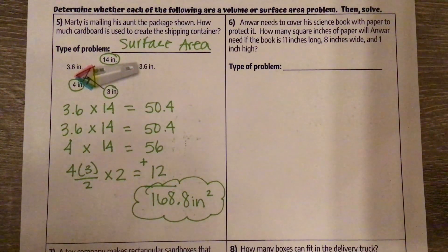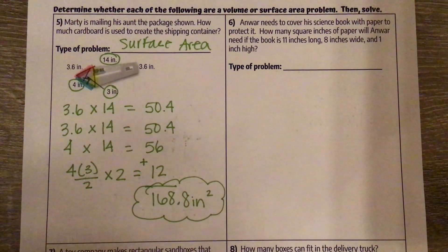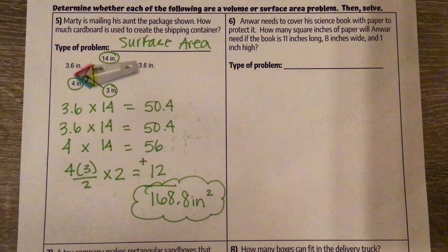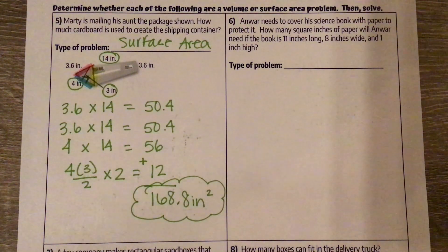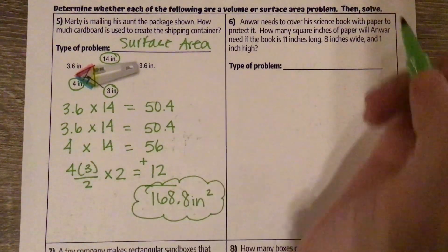Number 6: Anwar needs to cover his science book with paper to protect it. How many square inches of paper will Anwar need if the book is 11 inches long, 8 inches wide, and 1 inch high? So this one's a little bit tricky when we're thinking about this one.